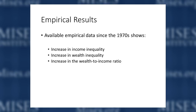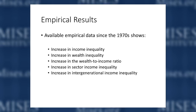To summarize the empirical results: the available data suggests there has been an increase in income inequality, an increase in wealth inequality, an increase in the wealth-to-income ratio indicating diminished upward social mobility, an increase in sector income inequality — specifically the financial sector compared to manufacturing — and an increase in intergenerational inequality, with older generations having much more favorable wage developments than younger generations.